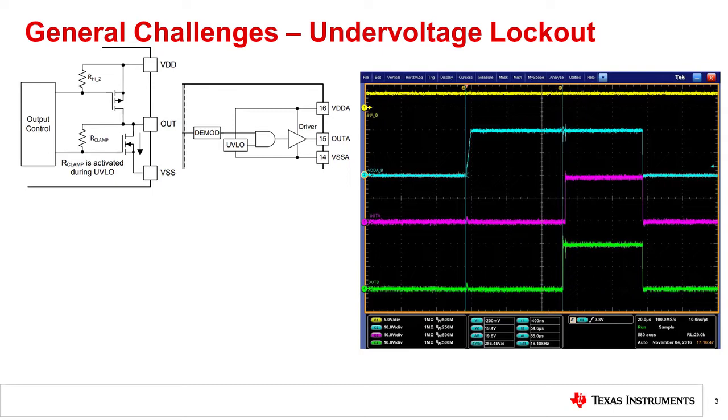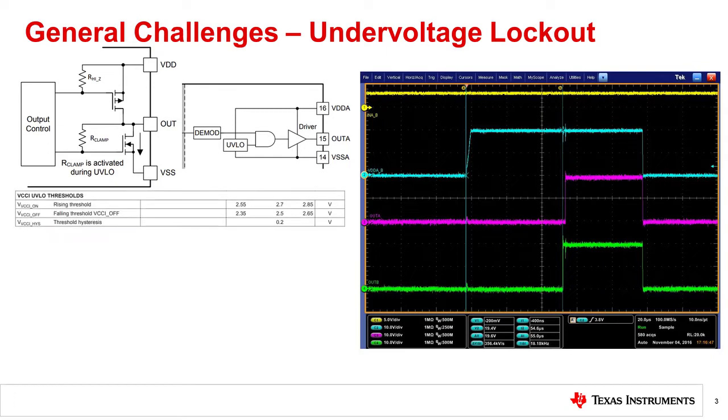Non-isolated gate drivers may share a UVLO threshold for the control and the low side driver, with a separate element for any level shifted segment. For isolated drivers, the control circuit UVLO is usually low voltage, designed to detect a 3.3 volt or 5 volt supply.